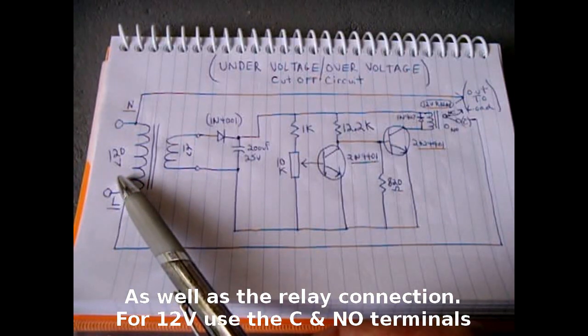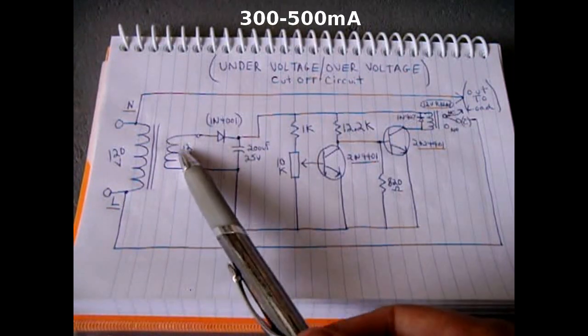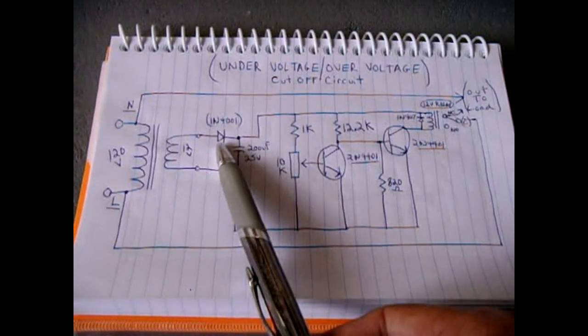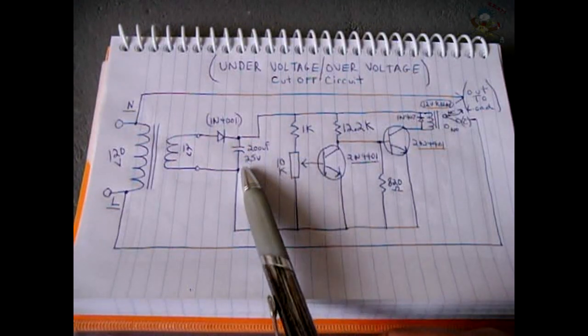For 120 volts, just take a 120 volt step down transformer to 12 volts, 3 to 500 milliamp output should be more than enough. Then you have a diode to convert to DC, and your capacitor for smoothing out the ripple. Then it supplies power to the entire circuit.